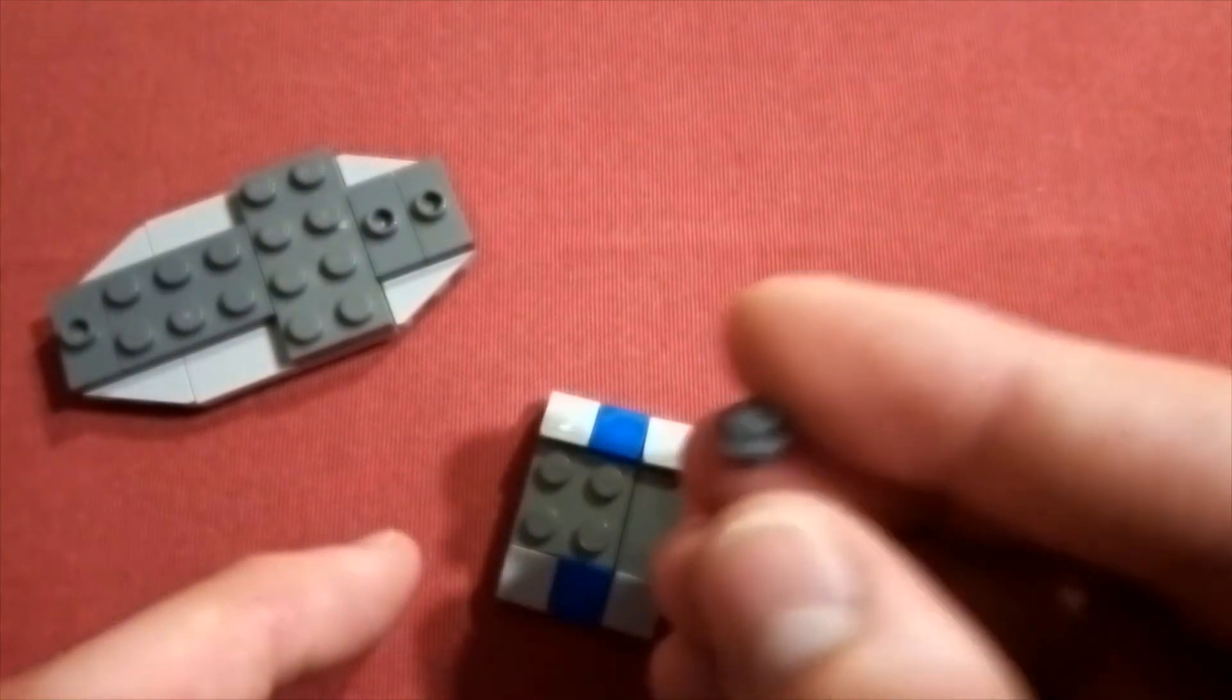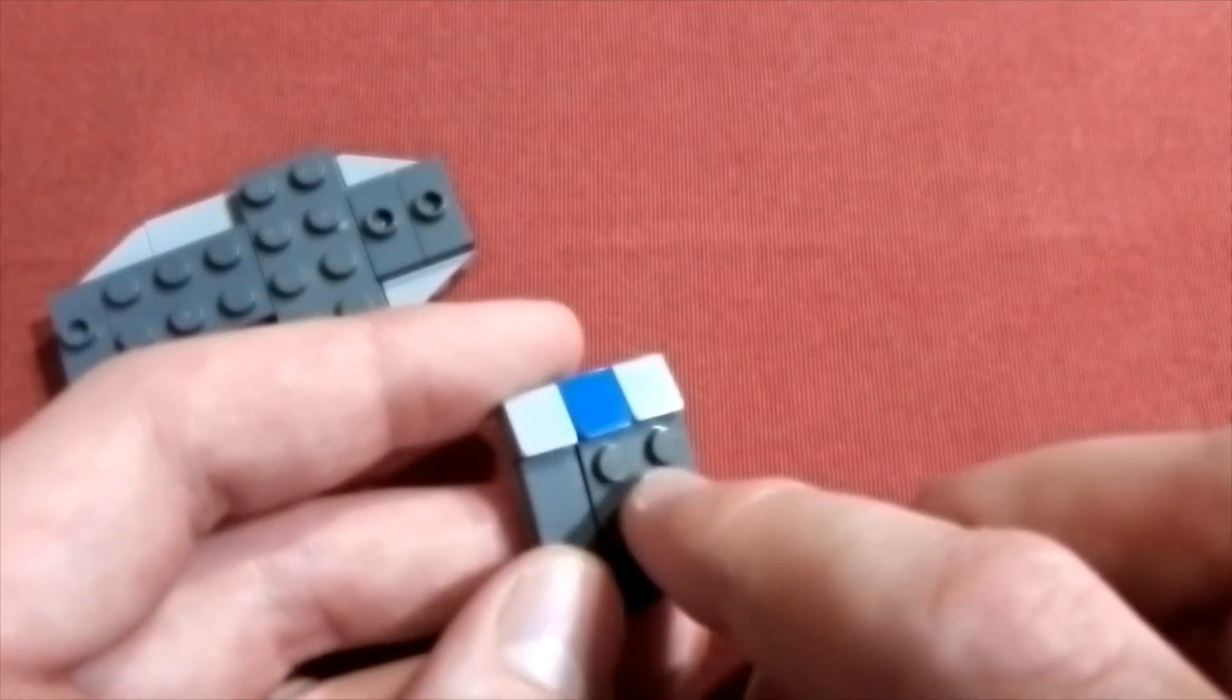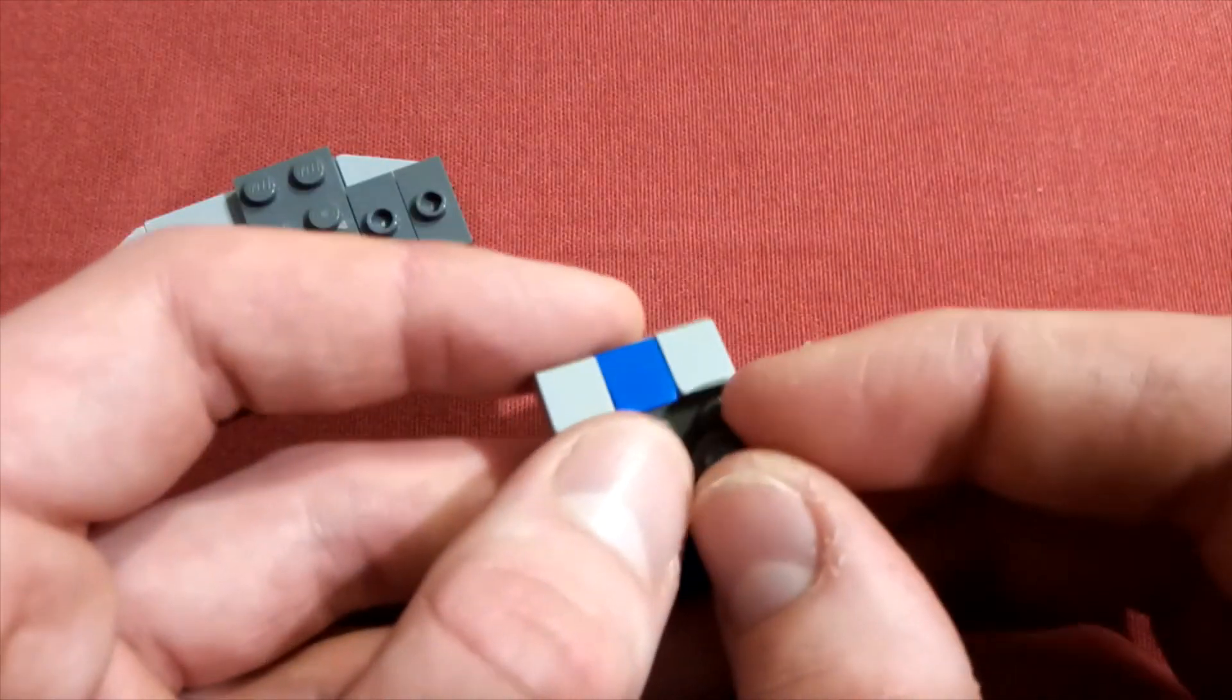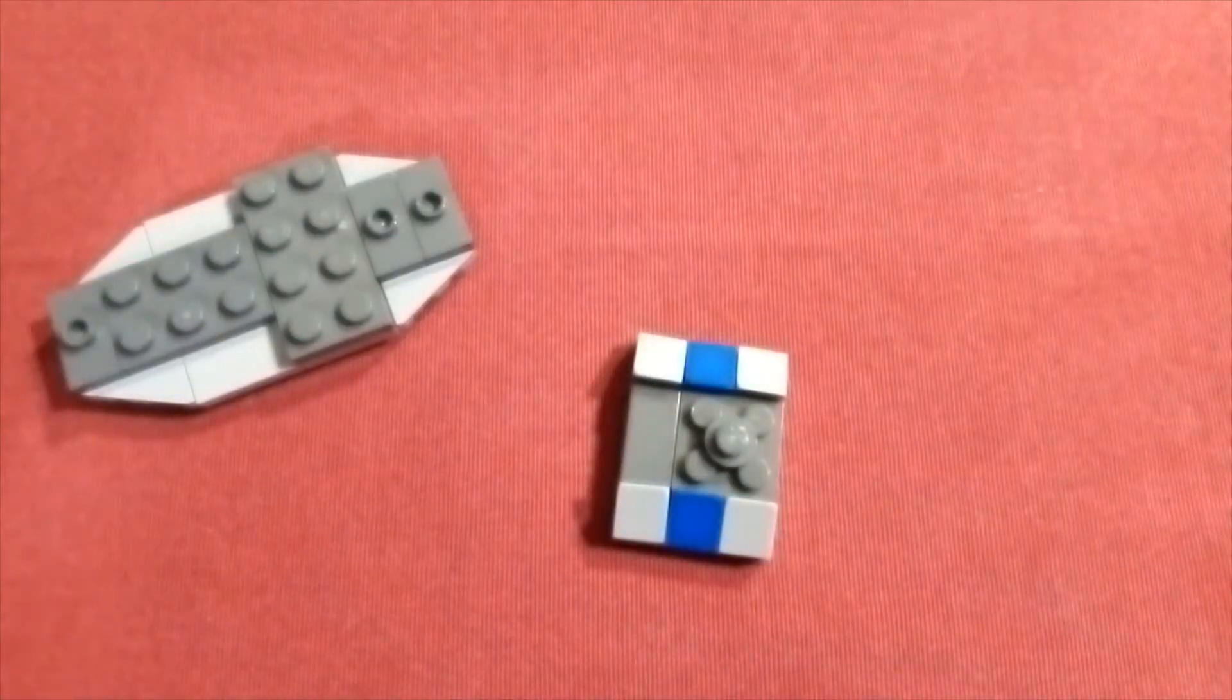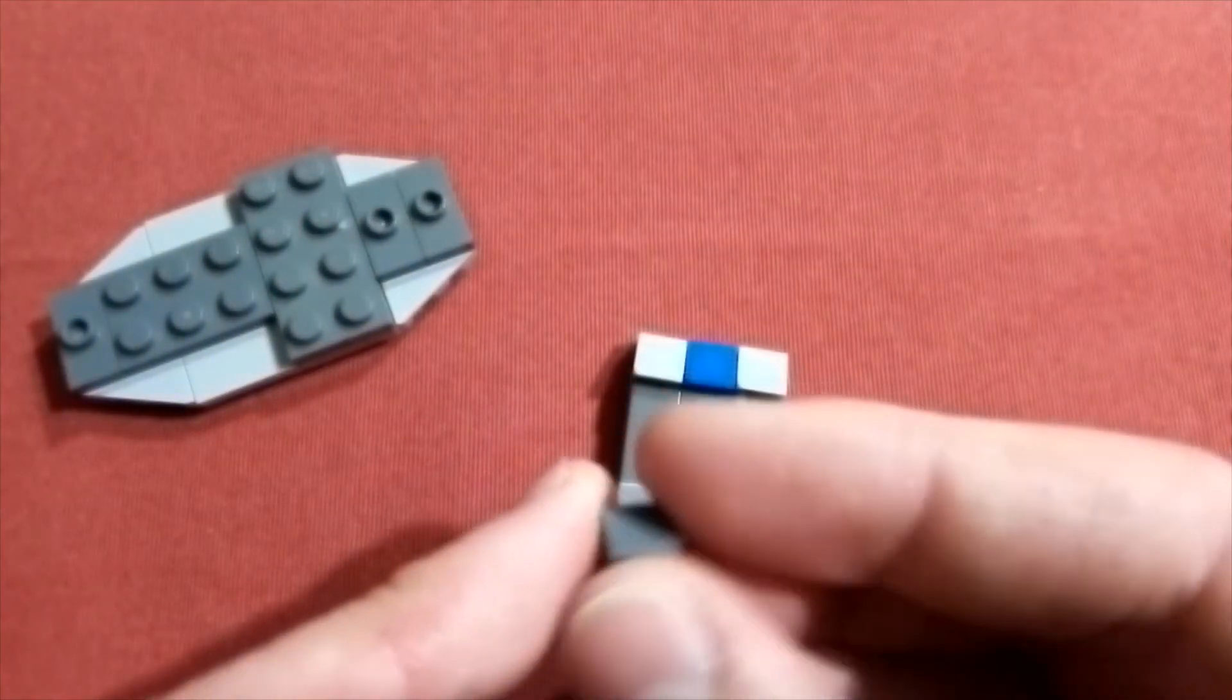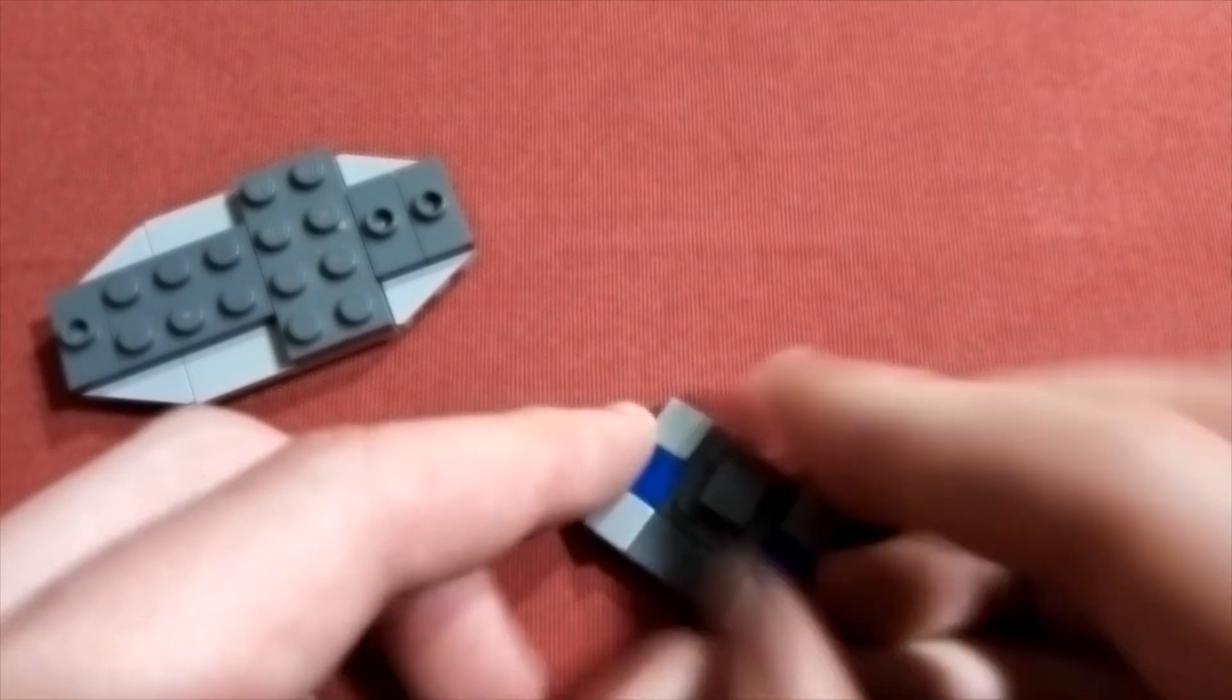Now take a dark bluish grey stud and put it in the middle of the 2x2. Hopefully it will go in first time. There. And then a 1x1 dark bluish grey tile goes on top of the stud there. That's the bridge done.